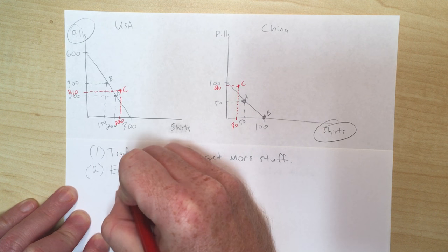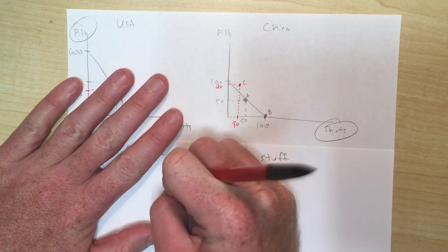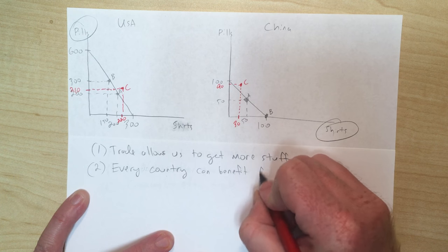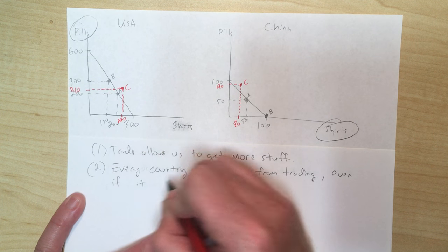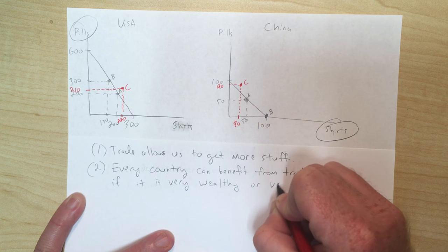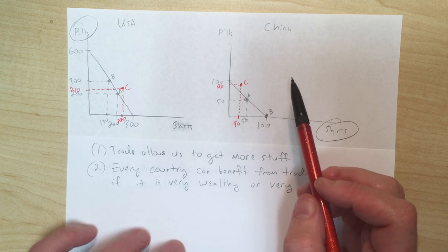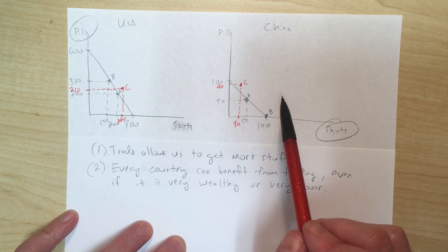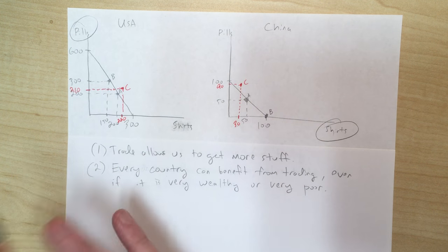A second takeaway: every country can benefit from trading, even if the country is very wealthy or very poor. In this example, the US is more productive at both goods and China is less productive at both, yet they can still make a trade that makes both better off. It doesn't matter if you're the wealthiest or the poorest country — you can still benefit from trade.